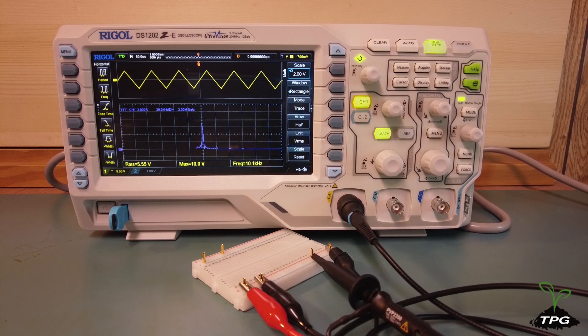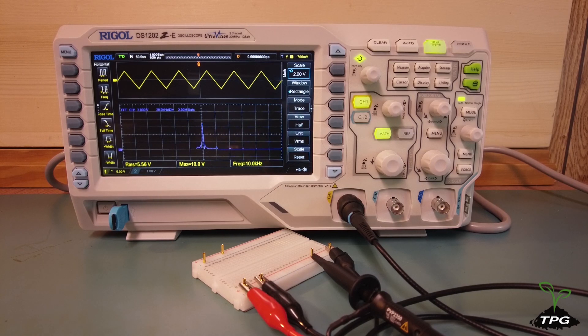Switch to triangle wave. The triangle wave features fewer harmonics compared to the square wave, with a more rapid amplitude decay.